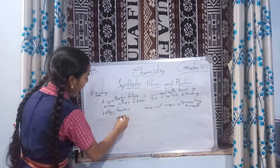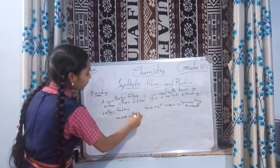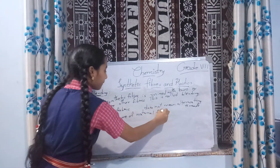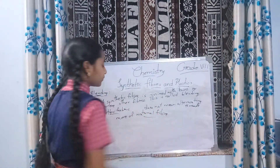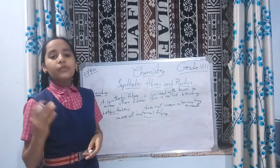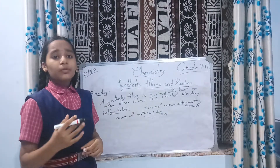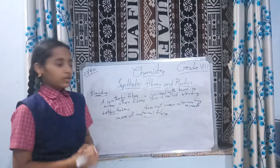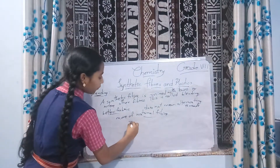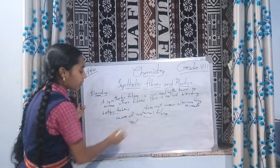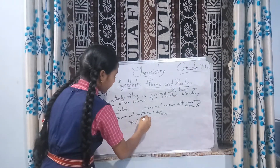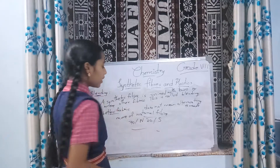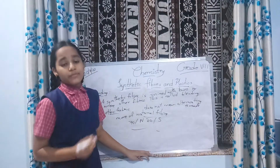In blending, there is one rule: you need to use more of natural fiber as compared to synthetic fiber, because natural fiber is free from irritating chemicals and is comfortable for us. For example, we need 70 percent natural fiber and 30 percent synthetic fiber to make a comfortable cloth that also absorbs water well.